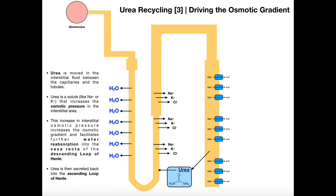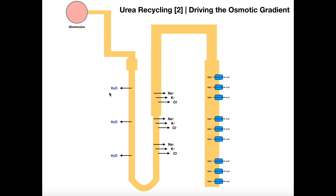But we want to maximize water reabsorption. So what really happens is this: from the collecting ducts, we actually have the movement of urea out into the interstitial area. Remember how these ions, when they're moved out of the ascending limb into the interstitial area before being reabsorbed into the blood, increase the osmotic pressure or osmotic gradient in the interstitial region, and that drives water reabsorption. It turns out that when urea is pumped from the collecting ducts into this interstitial region, urea acts as a solute as well that further increases this osmotic pressure or osmotic gradient. So you have more solutes here in the interstitial region, and you get even more water reabsorption when urea is dumped in here.